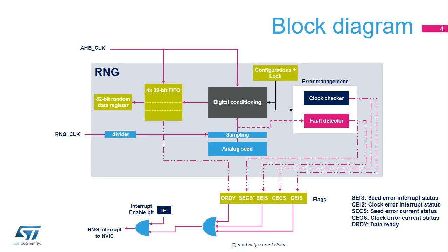The data ready flag, or DRDY, is triggered as soon as the FIFO is full, and is automatically reset when no more data can be read back from the RNG. In parallel, an error management block verifies the correct seed behavior and the frequency of the RNG source clock. Status bits are set and an interrupt is triggered if an abnormal sequence is detected in the seed or if the RNG frequency is too low.